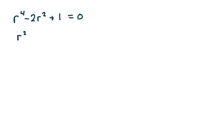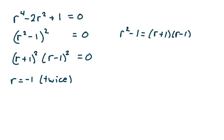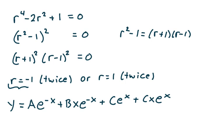This factors as r squared minus 1 squared equals 0, which gives r plus 1 squared times r minus 1 squared equals 0. Remember, r squared minus 1 equals r plus 1 times r minus 1. So r equals negative 1 twice, and r equals 1 twice. Writing the general solution: y equals a e to the negative x plus bx e to the negative x, plus c e to the x plus cx e to the x.